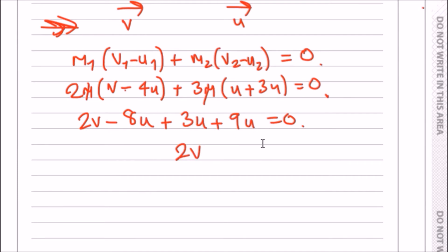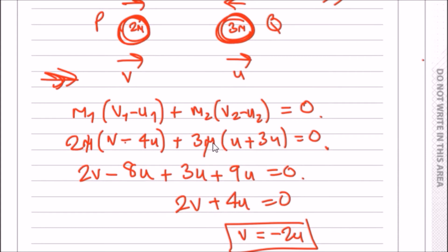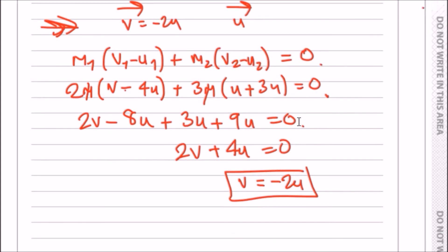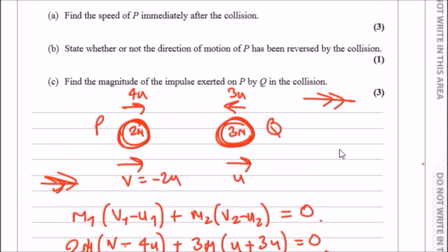Now finally, let's collect like terms. We've got 2v we keep there, and we've got minus 8, so 3u plus 9u is 12, 12 take away 8 is 4, so 2v plus 4u equals 0. Finally solving this for v, we should get v equals minus 2u.